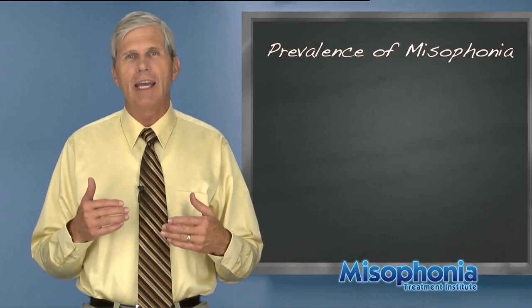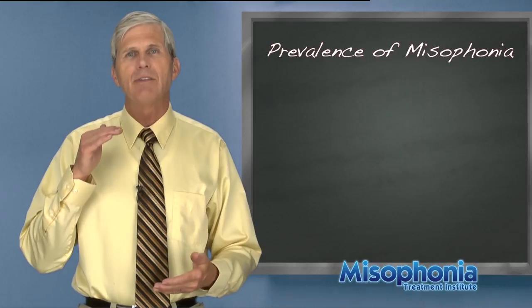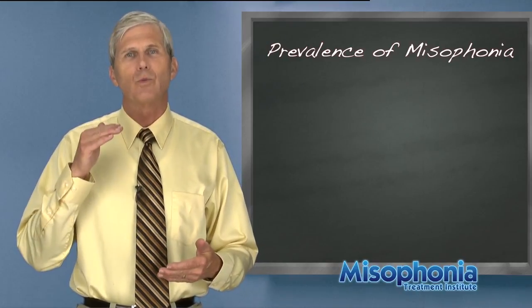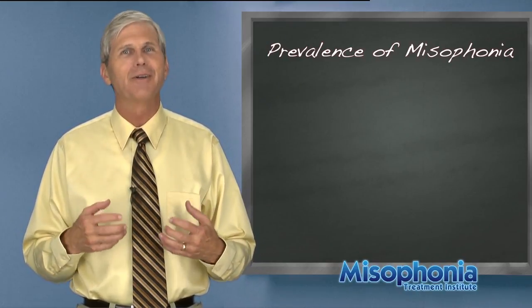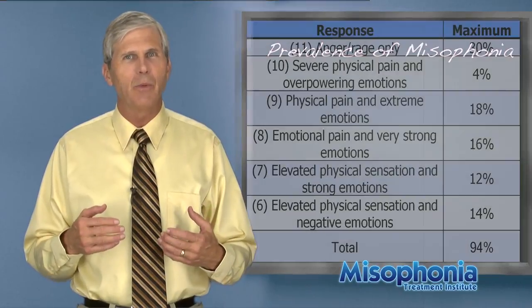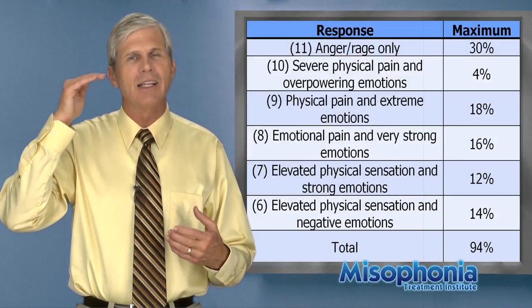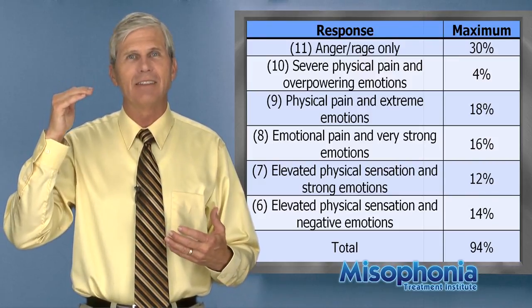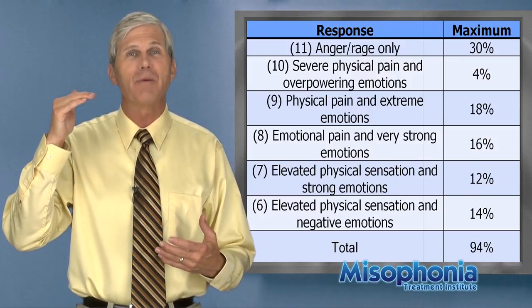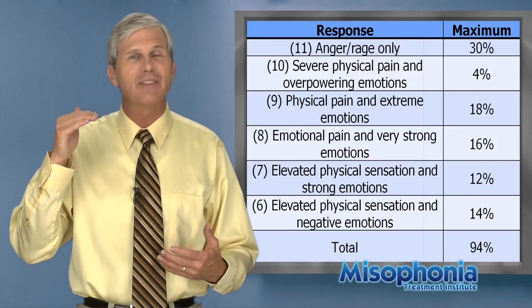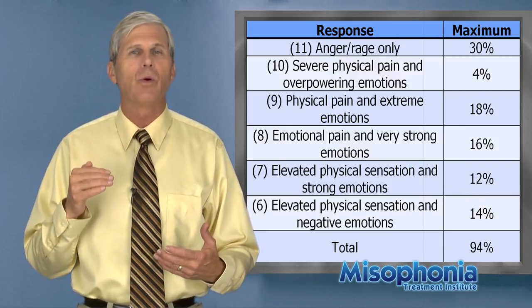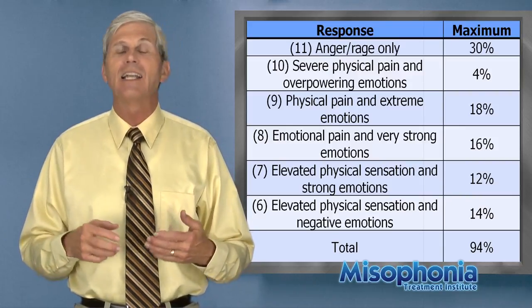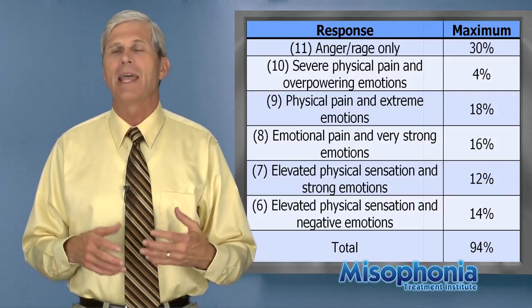Part of this survey had an 11 point rating for how severe was their misophonia. It went from 11, having anger and rage only, then down to having severe physical pain and overpowering emotions, physical pain and extreme emotions, on down to number six, which was elevated physical sensations and negative emotions.